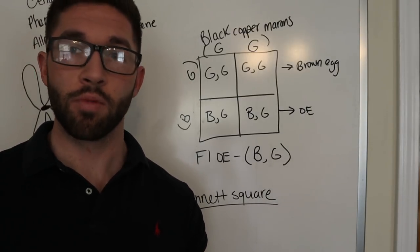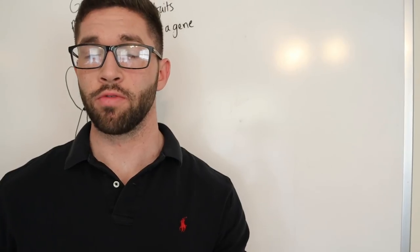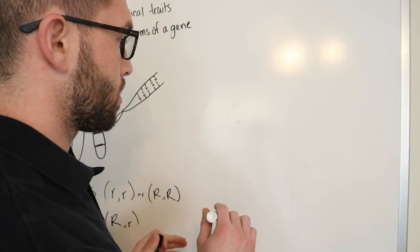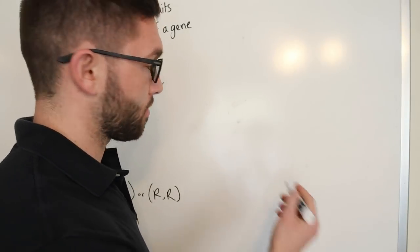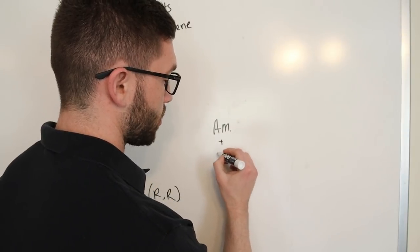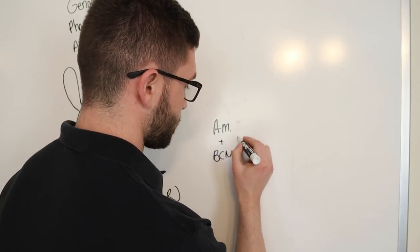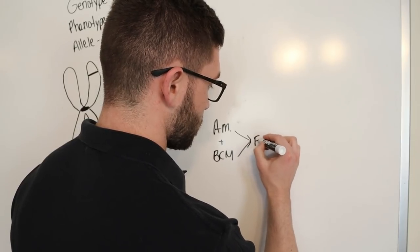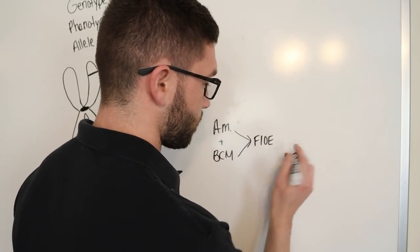If you had trouble following along on the Punnett squares before, let me show you just a small diagram of the crosses. So, if you use an Americana plus a Black Copper Maran, you'll always produce first generation olive eggers, F1 OE.